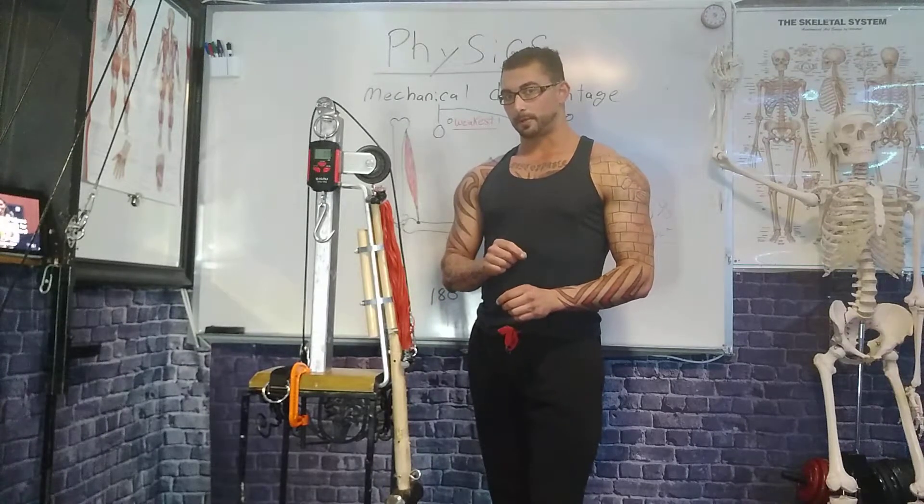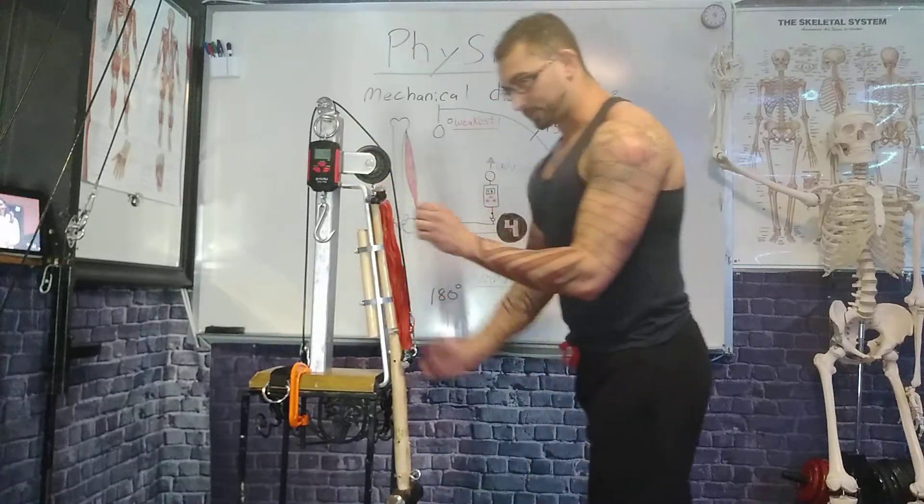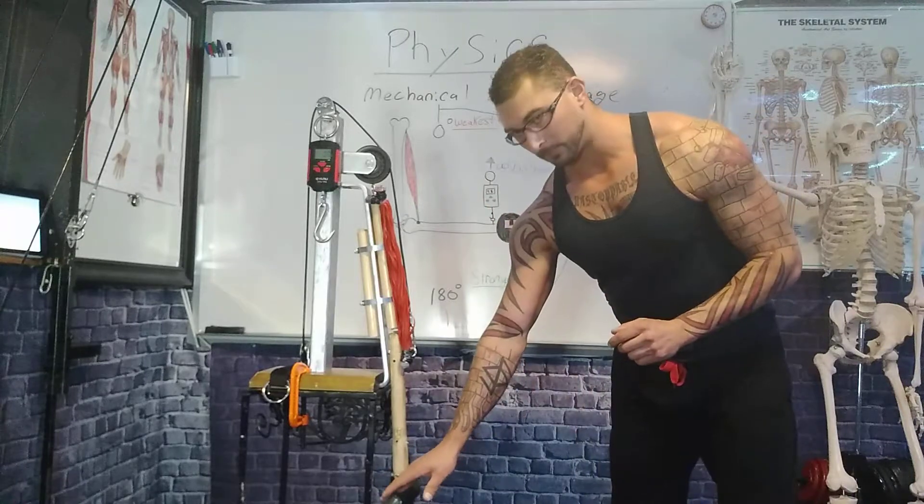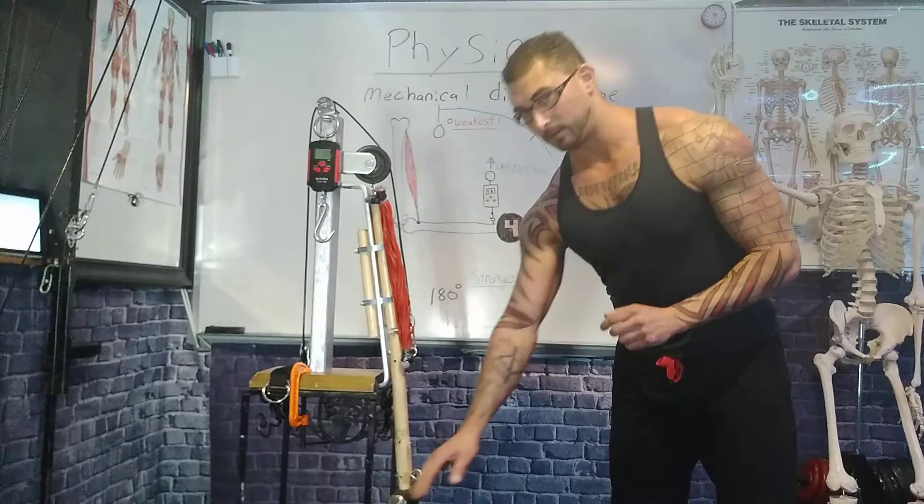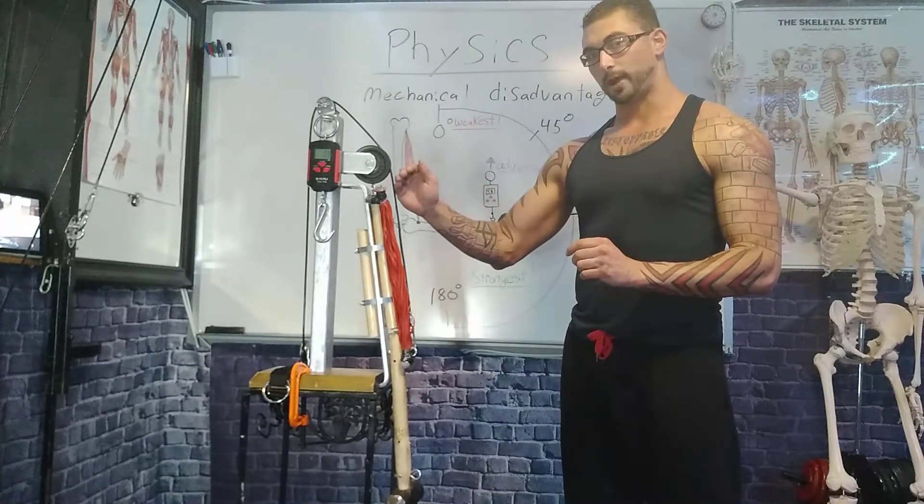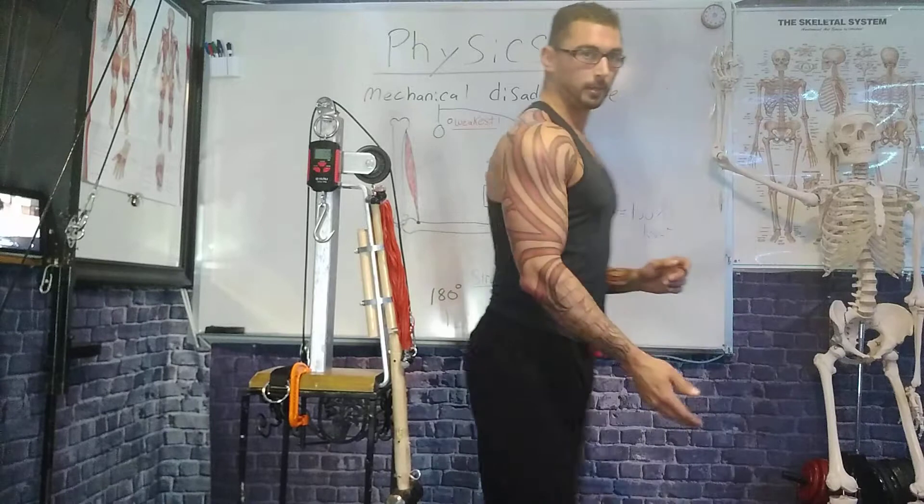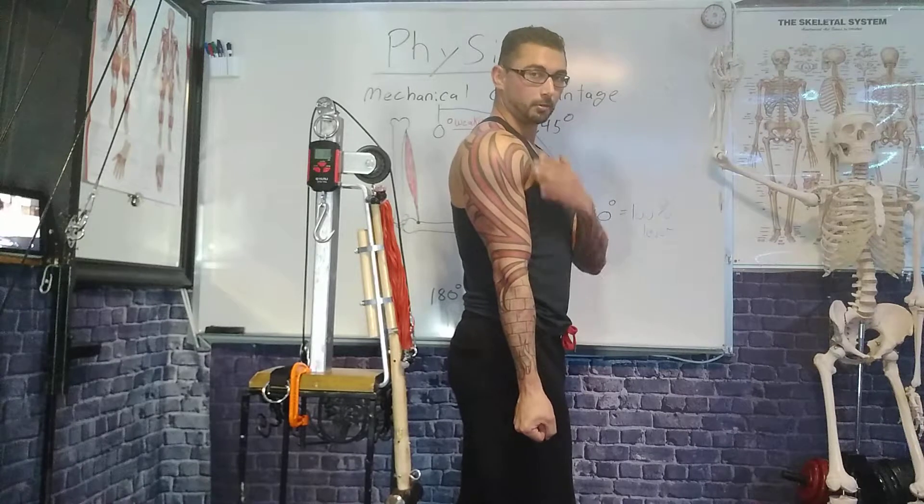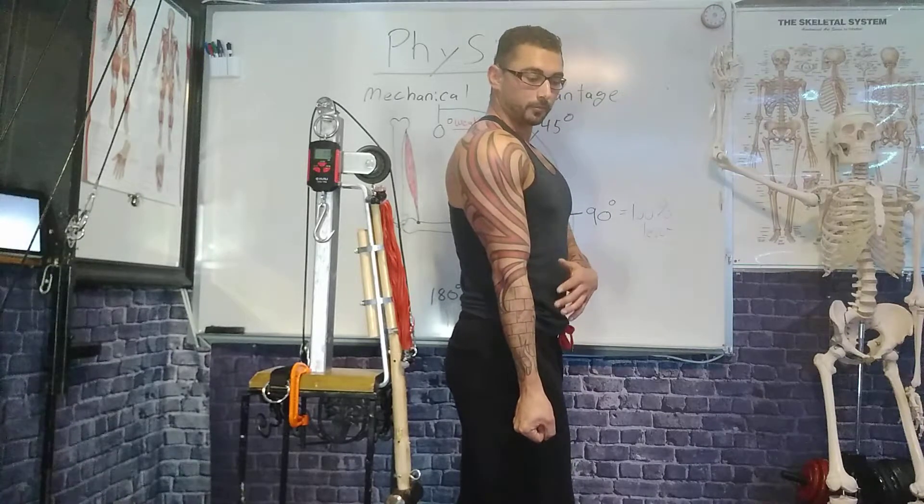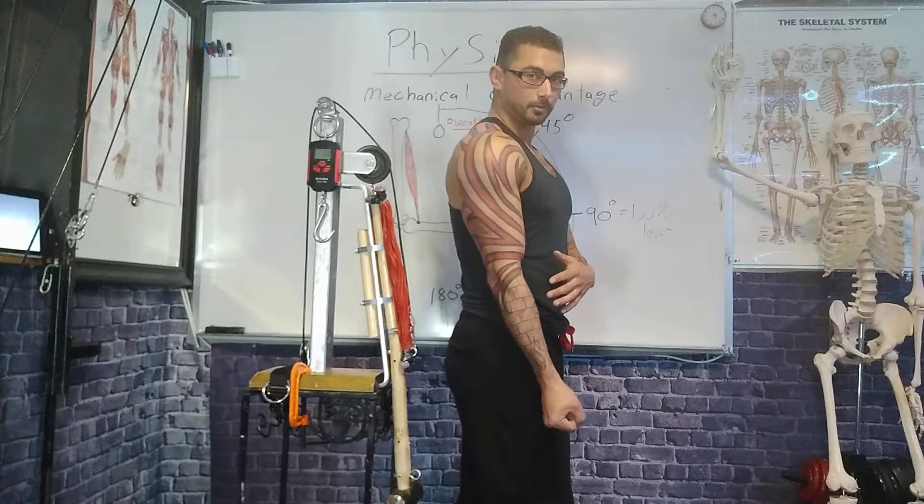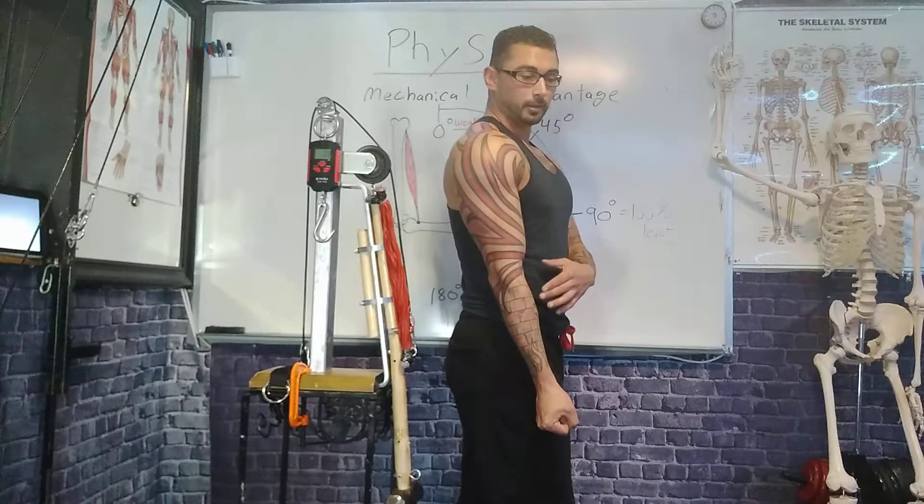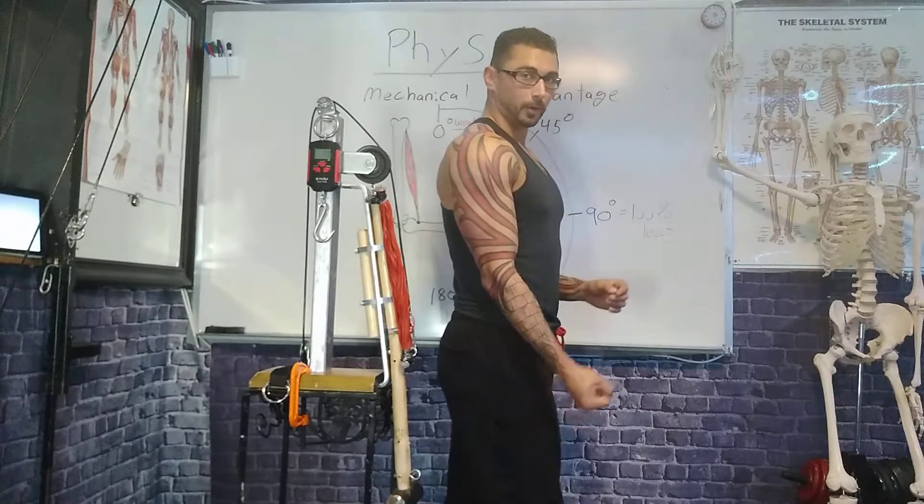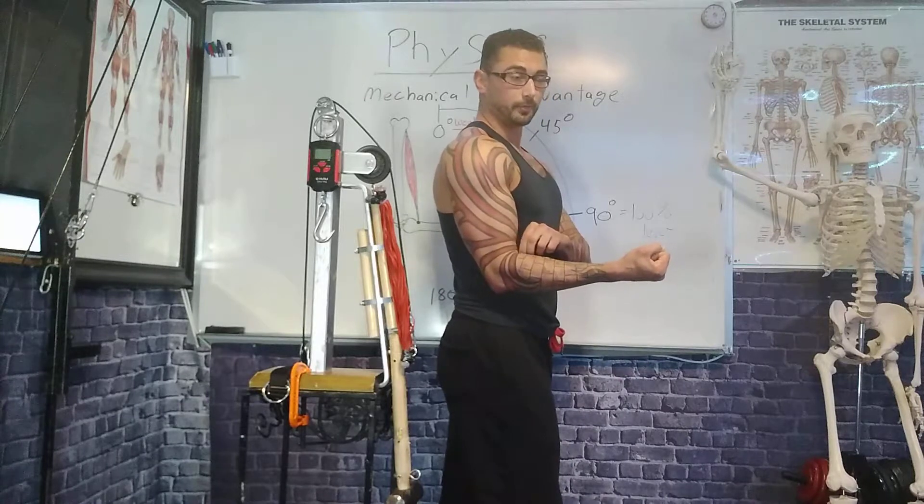Next thing we're going to talk about is the resistance curve, and how muscles are stronger when they're elongated or stretched, and weakest when they're contracted. So, in the case of a bicep curl, when you're down here, 180 degrees, there's no load upon the bicep. However, as soon as you take it out of 180 degrees, even a little bit, it requires a great amount of strength and effort to perform that. However, when you get here, it is significantly easier.